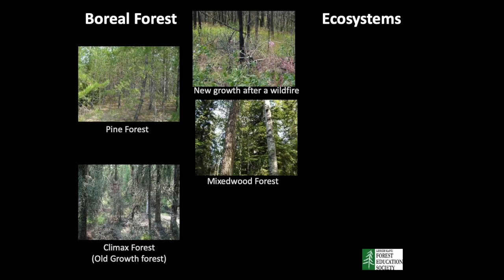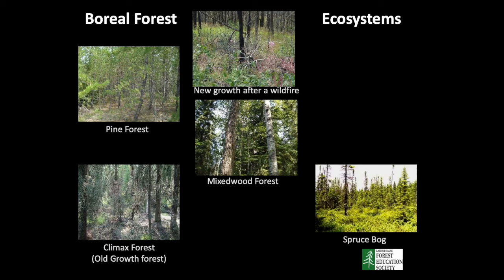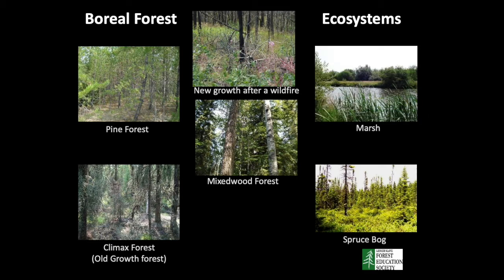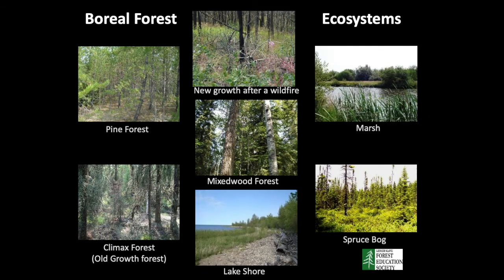Pine trees are best adapted to grow in sandy soil. Black spruce trees are best adapted to grow in wet peat moss. Cattails grow on the edges of ponds and marshes, and plants that grow on a mountain top are not the same as those that grow beside a lake shore. Knowledge of the types of trees and plants will indicate what kind of wildlife live in the area, the type of soil, and could help us manage a forest for all uses.